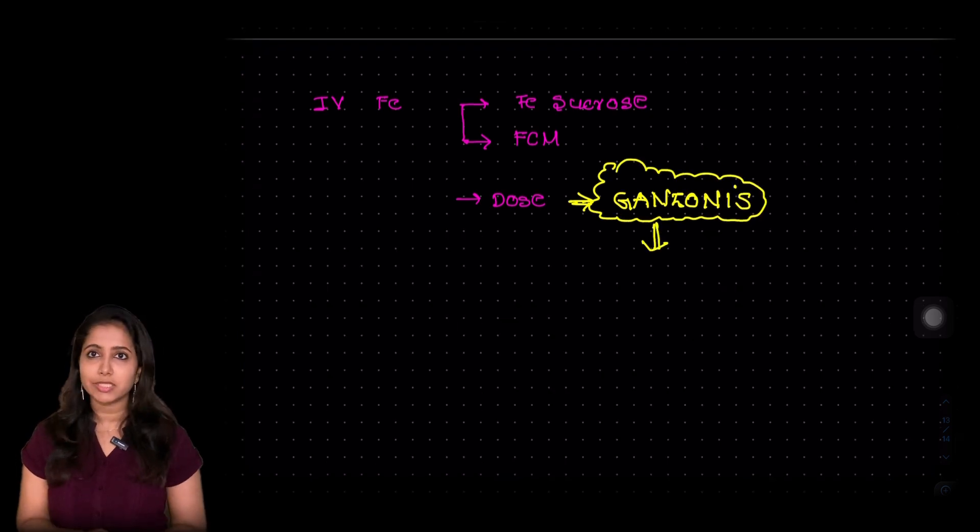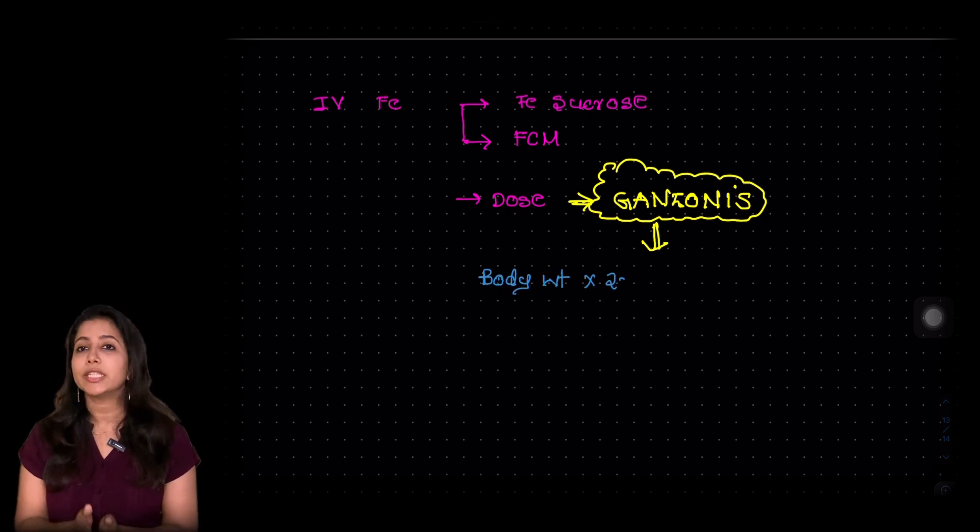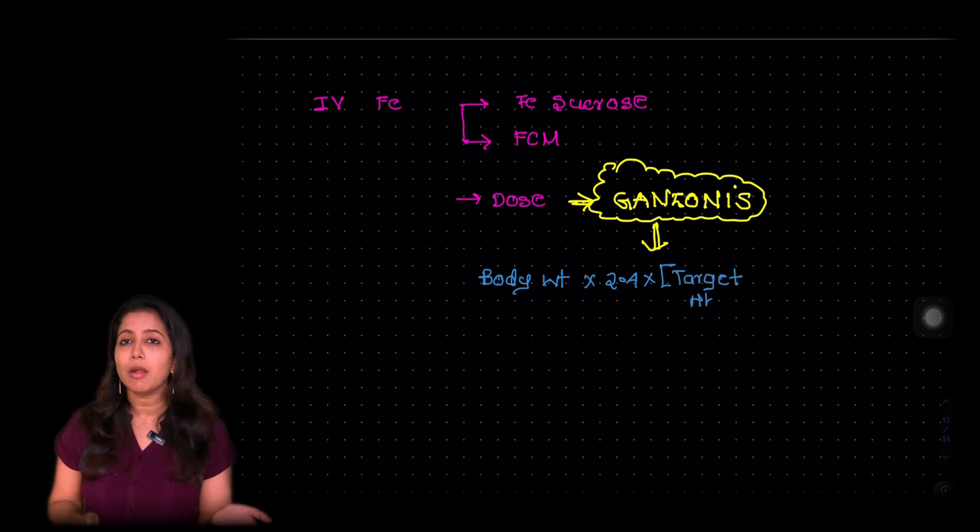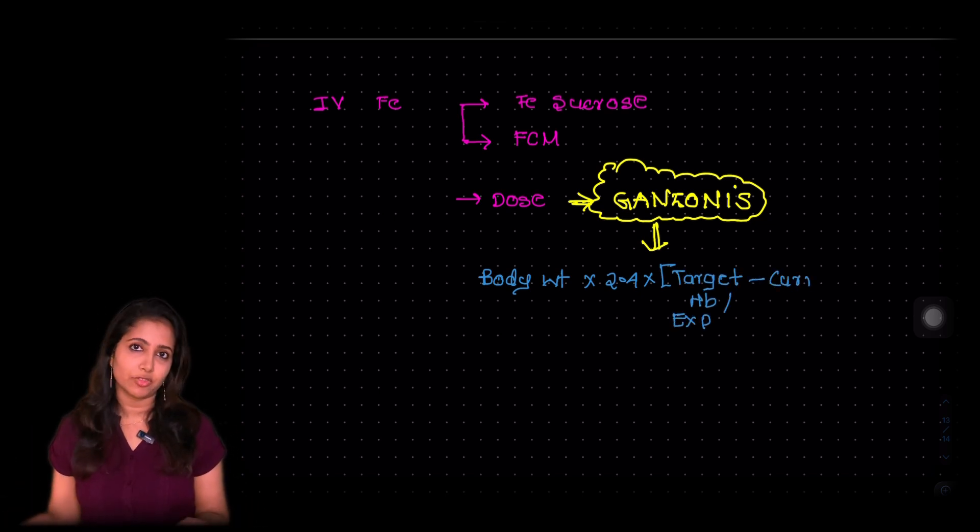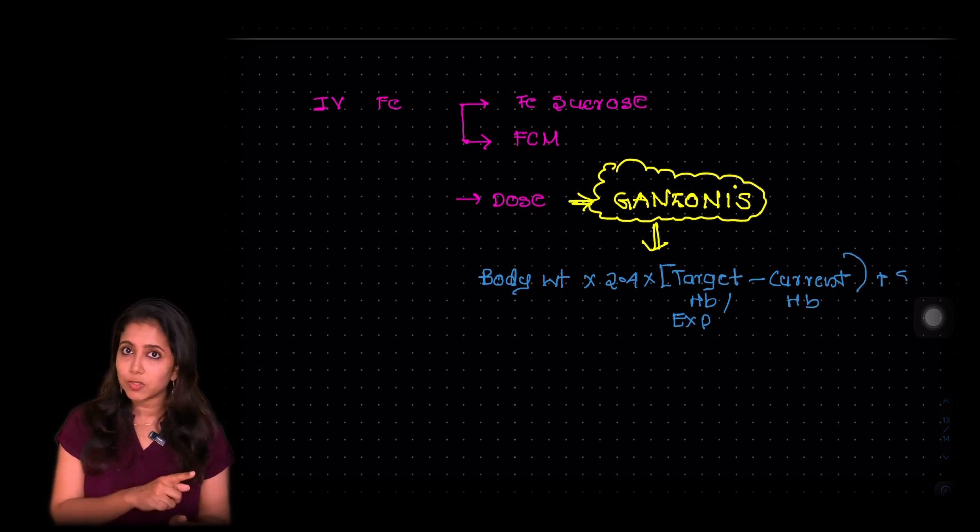So this formula is the body weight of the woman into 2.4 into expected hemoglobin minus the current hemoglobin plus 500. Just have a look at this formula.